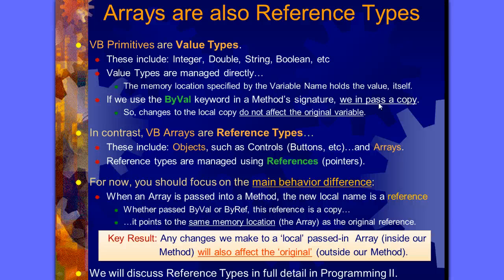In contrast, Visual Basic arrays are reference types. They're not value types, they're called reference types. These include objects such as controls like buttons and arrays. Reference types are managed using references or pointers. You should focus on the main behavior difference between reference type and value type.